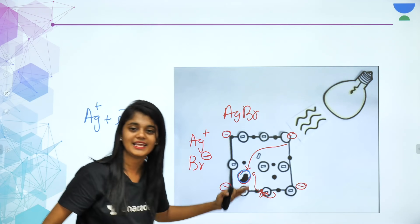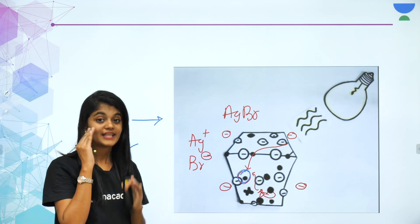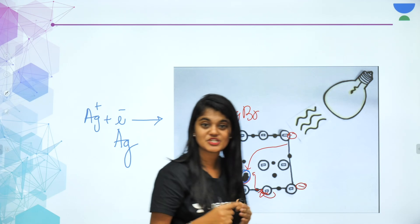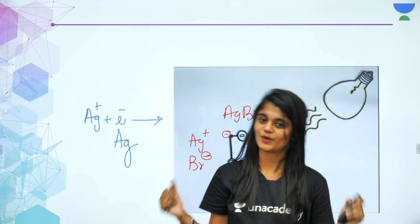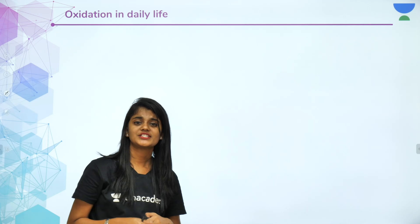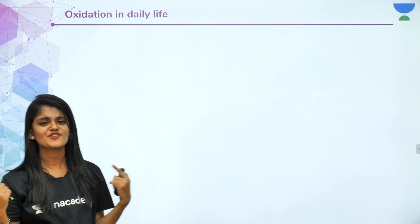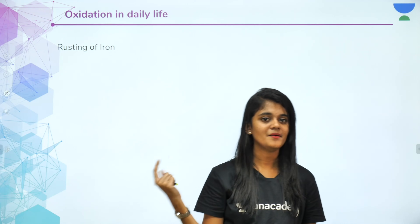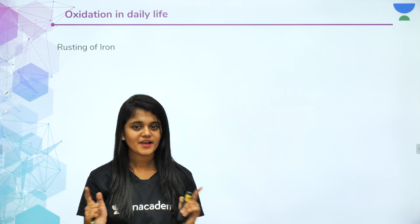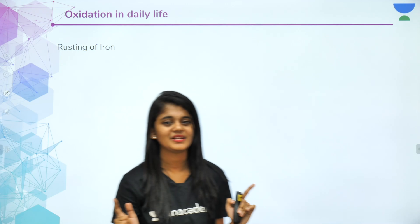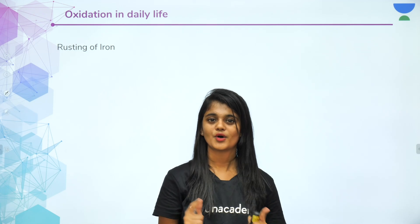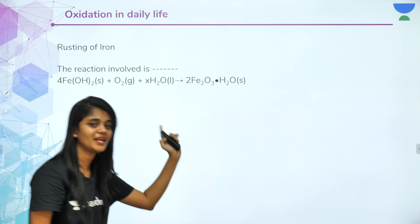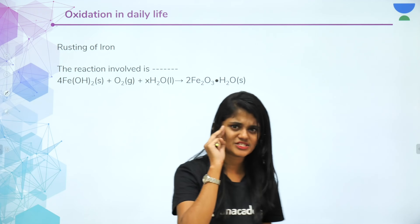The image at this stage is invisible — it has to be developed, which is next level chemistry. So basically, the formation of black and white photography involves photochemical decomposition of silver bromide. Now let's look at oxidation in daily life. The first and very common example is rusting of iron. We talked about this in the first lecture.